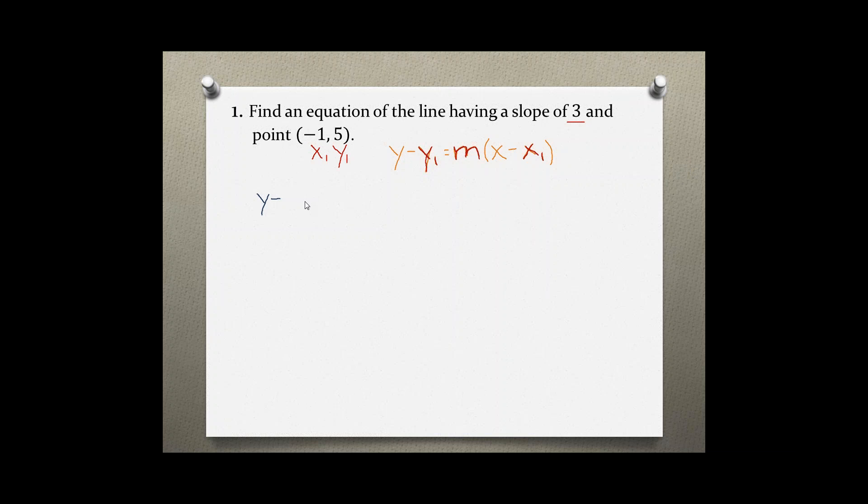So y - y₁, in this case 5, is equal to m, which is 3, times (x - x₁), which is (x - (-1)).